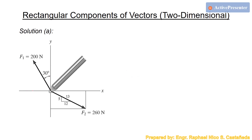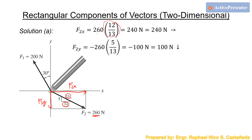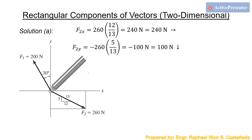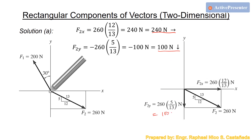For F2: F2x = 260·(12/13) = 240 N to the right (positive), and F2y = 260·(5/13) = 100 N downward (negative). So the answers for Part A are: F1x = 100 N to the left, F1y = 173 N upward, F2x = 240 N to the right, and F2y = 100 N downward.